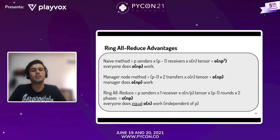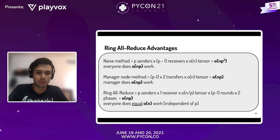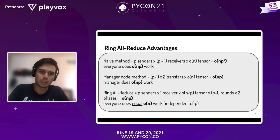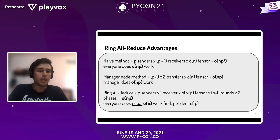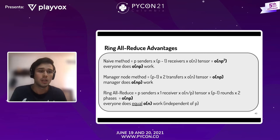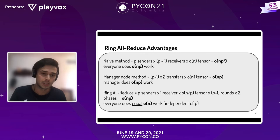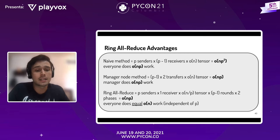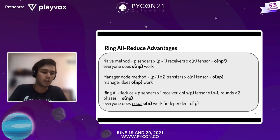Ahora voy a hablar de por qué esta estrategia de Ring All-Reduce es importante frente a métodos más sencillos. Había un método Baseline en el que cada GPU le mandaba la información a las demás. Hay otro método del nodo maestro en el que todas las GPUs le mandan los gradientes a otra GPU, esa GPU agrega y devuelve la información. La ventaja del Ring All-Reduce es que es óptimo en términos de comunicación en la red.